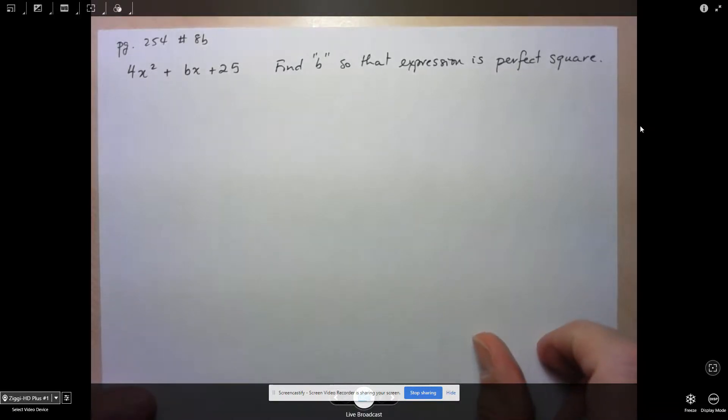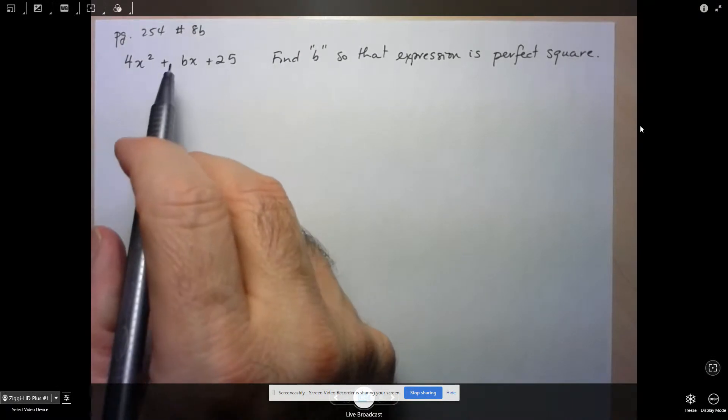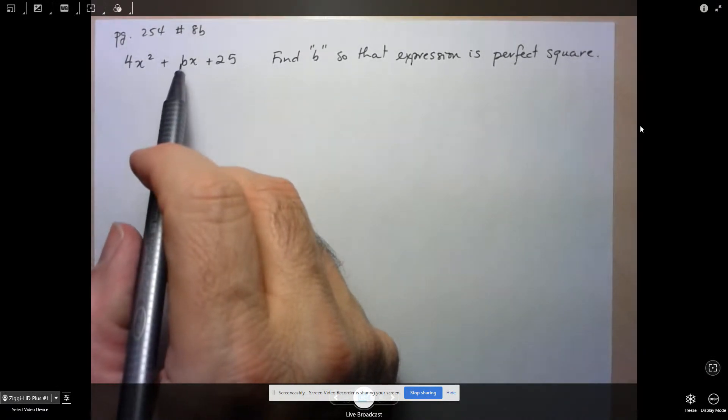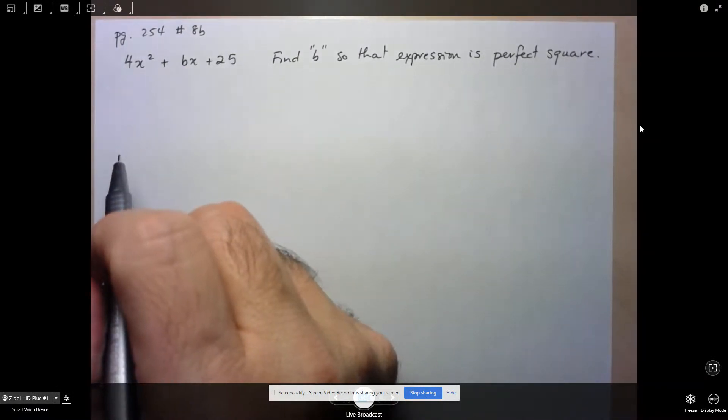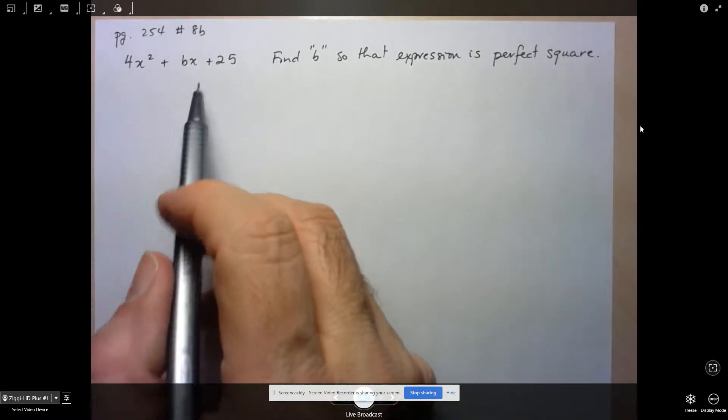Hi folks, we're going to take a look at page 254, number 8b. So they give us this trinomial here, but the coefficient of x is unknown. And they want us to determine values of b so that this expression is a perfect square.